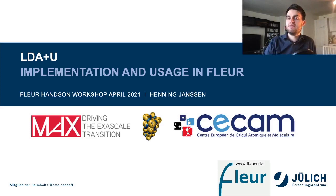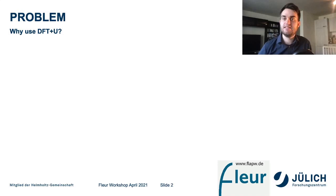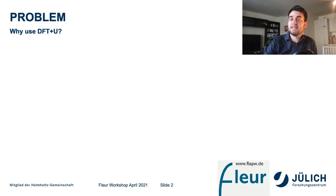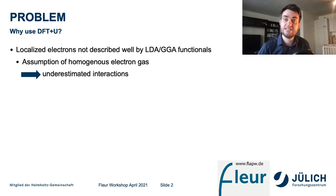Let's start with why we would need the DFT plus U method in the first place. One of the main choices we have to make in any DFT calculation is the choice of the exchange-correlation functional. Two of the main functionals are the LDA or GGA functionals, which approximate the electron density locally as that of a homogeneous electron gas. This works surprisingly well, but breaks down where we have localized electrons, whose interactions are underestimated by LDA or GGA.